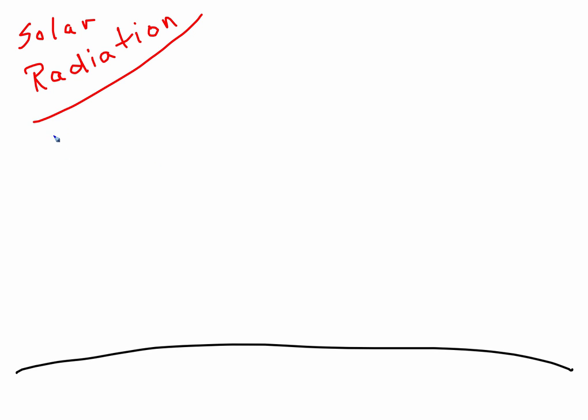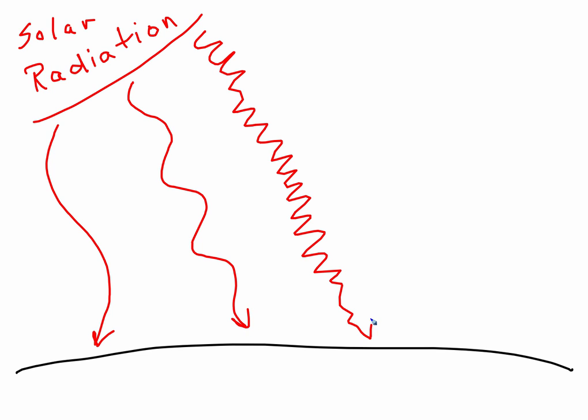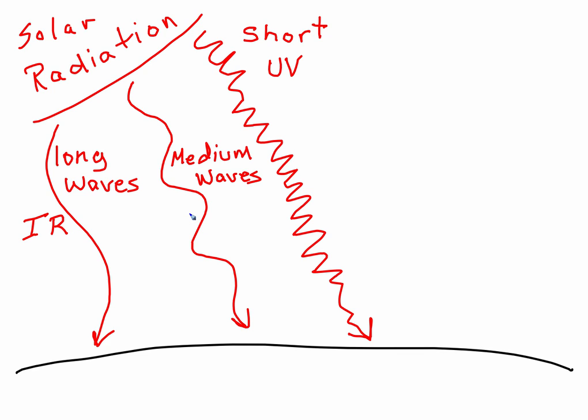We have long waves. We have medium waves. And we have short waves. So short waves are ultraviolet. Long waves are infrared.